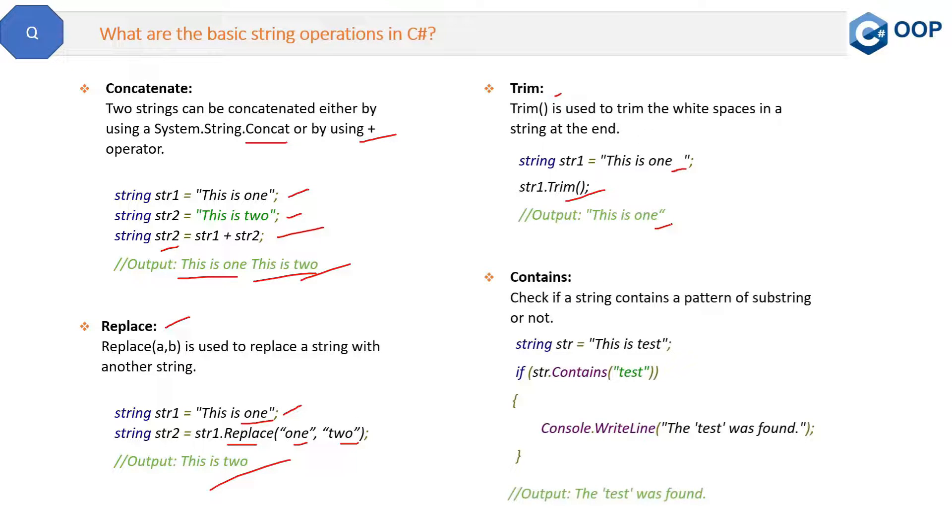Now the last one is Contains. Contains basically checks if a string contains a pattern or substring. This method will return a boolean value, either true or false. Suppose this is a string: 'This is a test'. Now the string Contains method will check whether the word 'test' is present in this statement or not. If it is present, it will return true; if not, it will return false. In our particular case, it is true because 'test' is present in this statement, so it will go inside and the output will be 'The test was found'. So that's all about some of the important string methods.